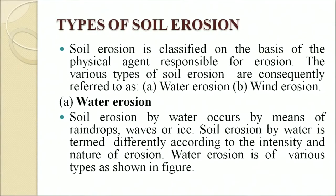The various types of soil erosion are referred to as water erosion and wind erosion. Soil erosion by water occurs by means of raindrop, wave or ice. It is termed differently according to the intensity and nature of erosion. Water erosion is of various types as shown in the figure.